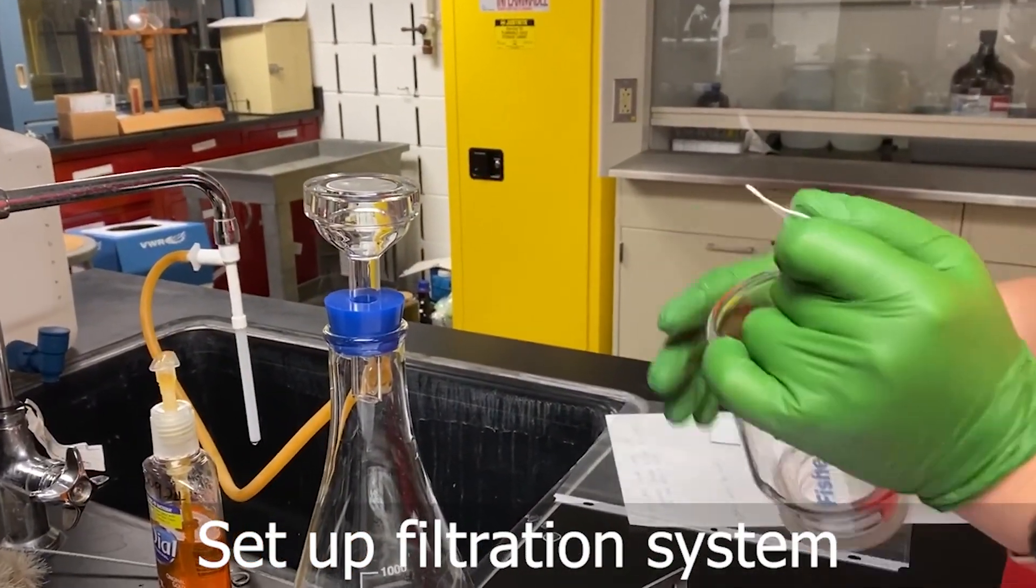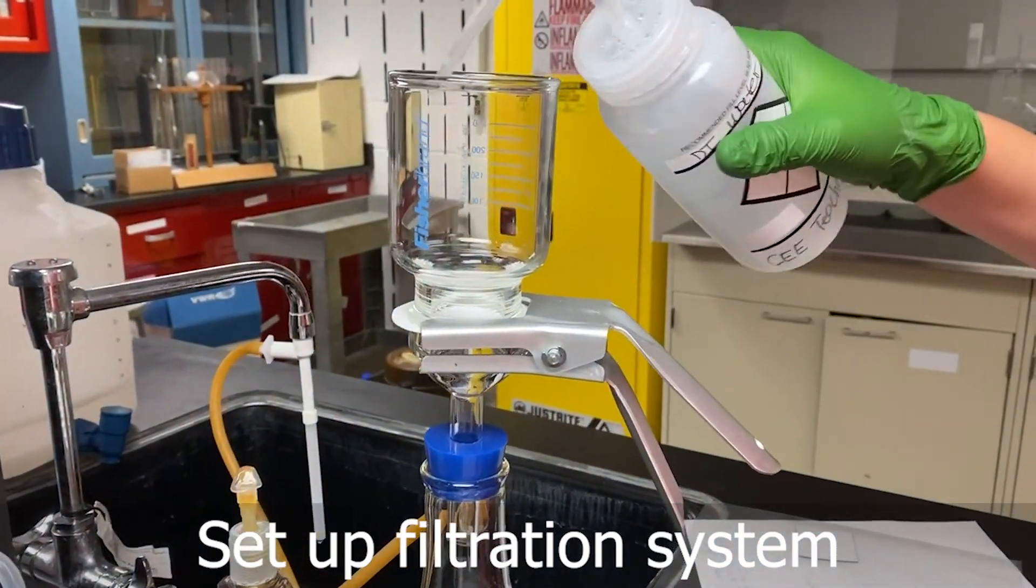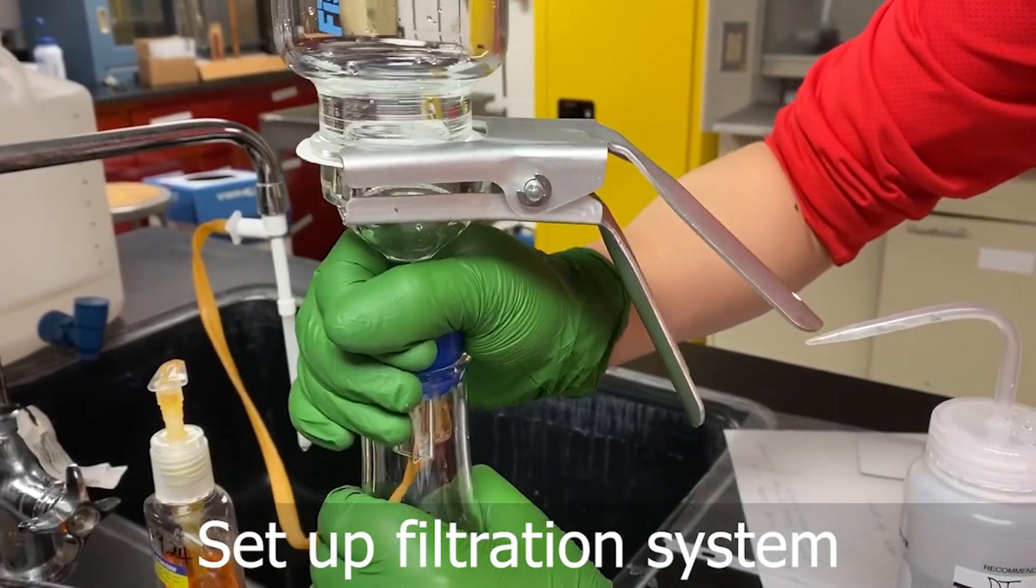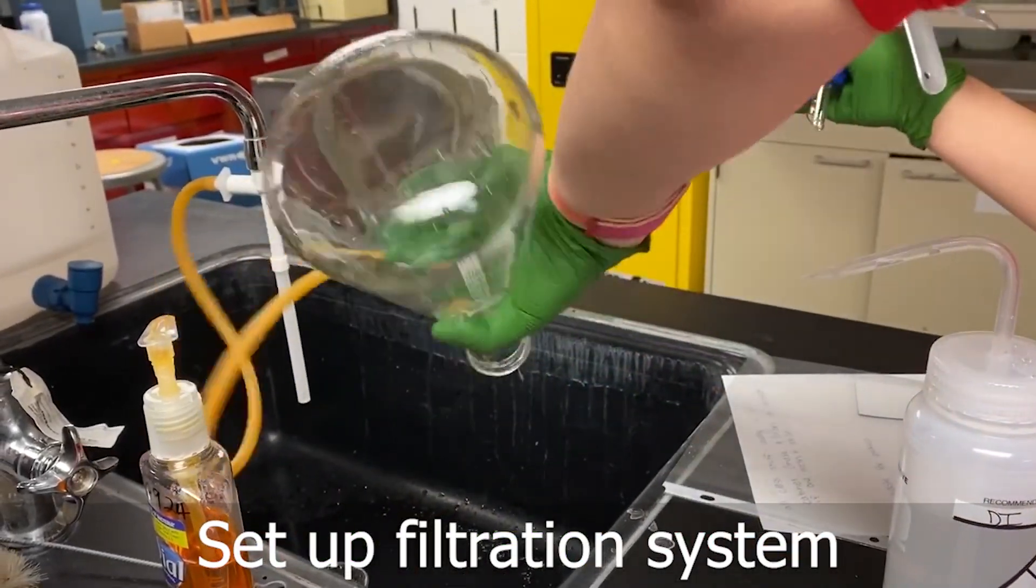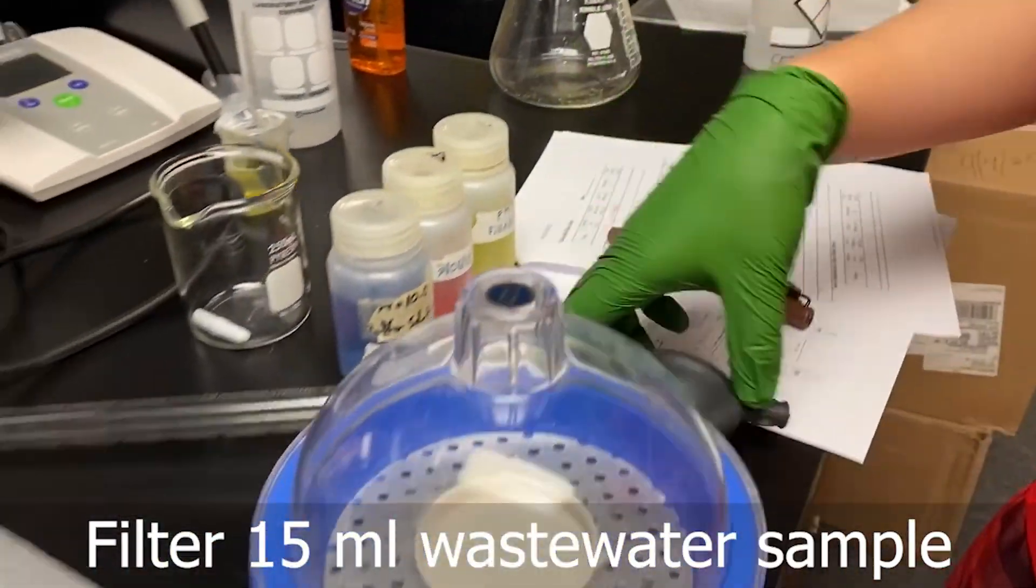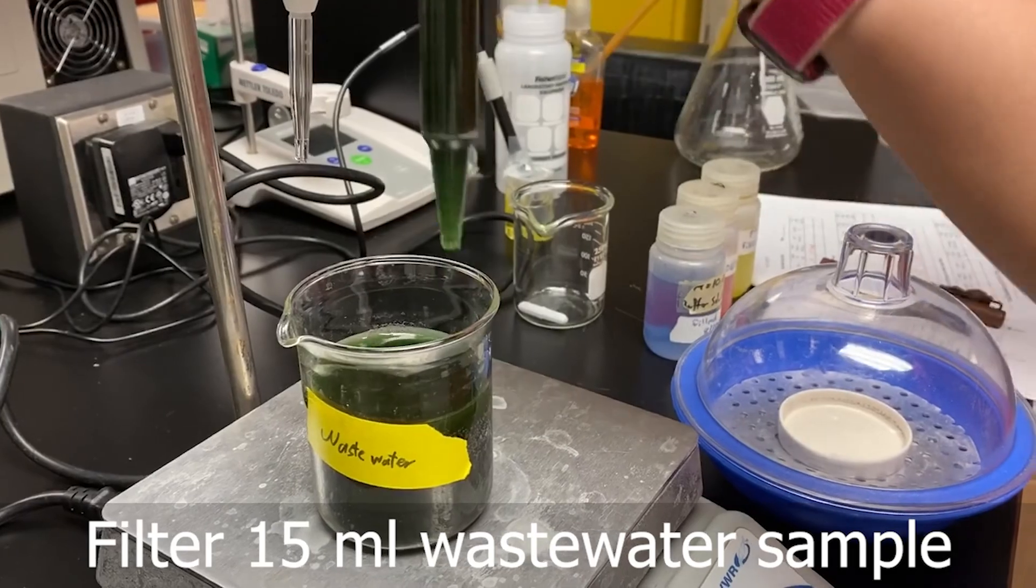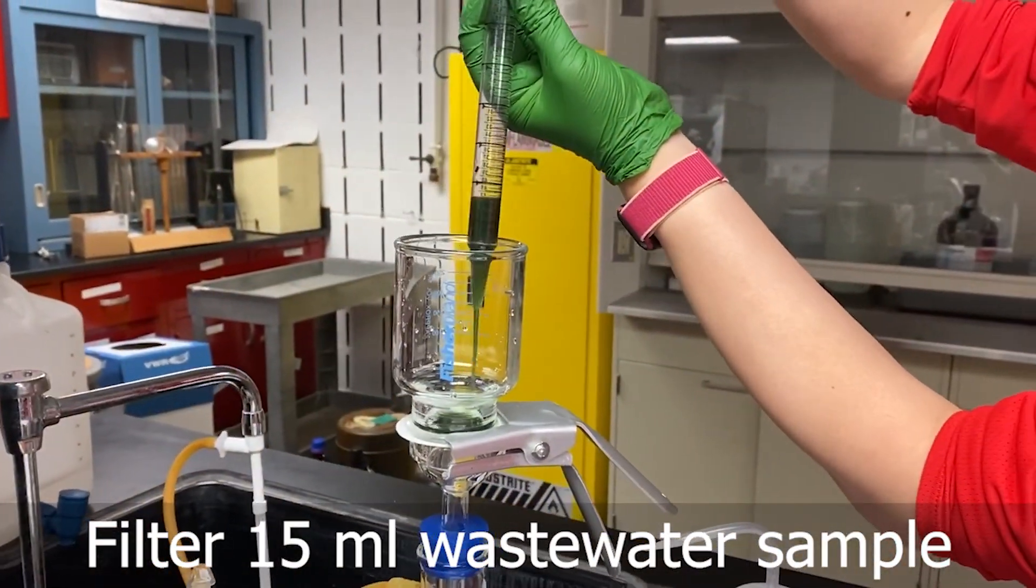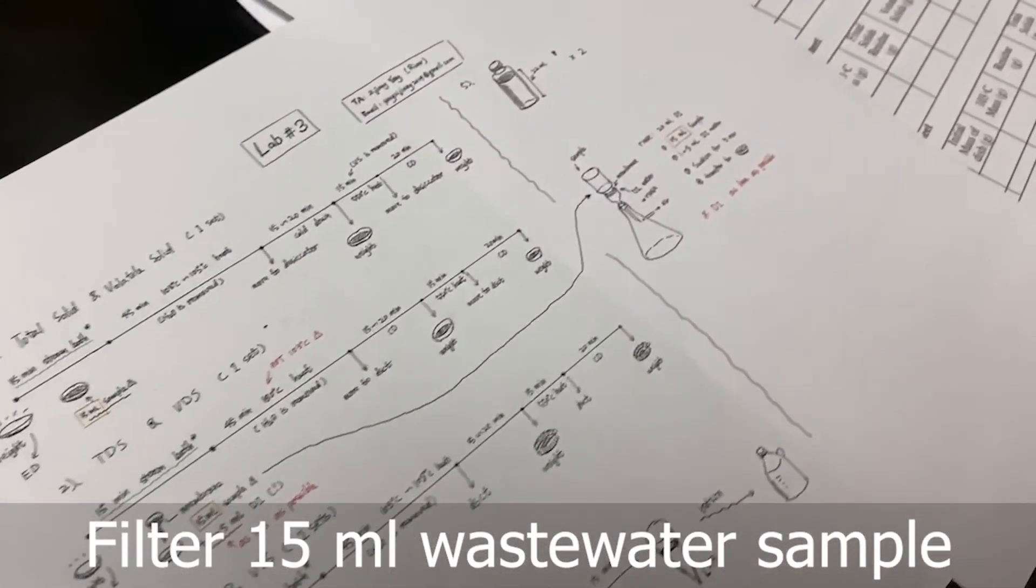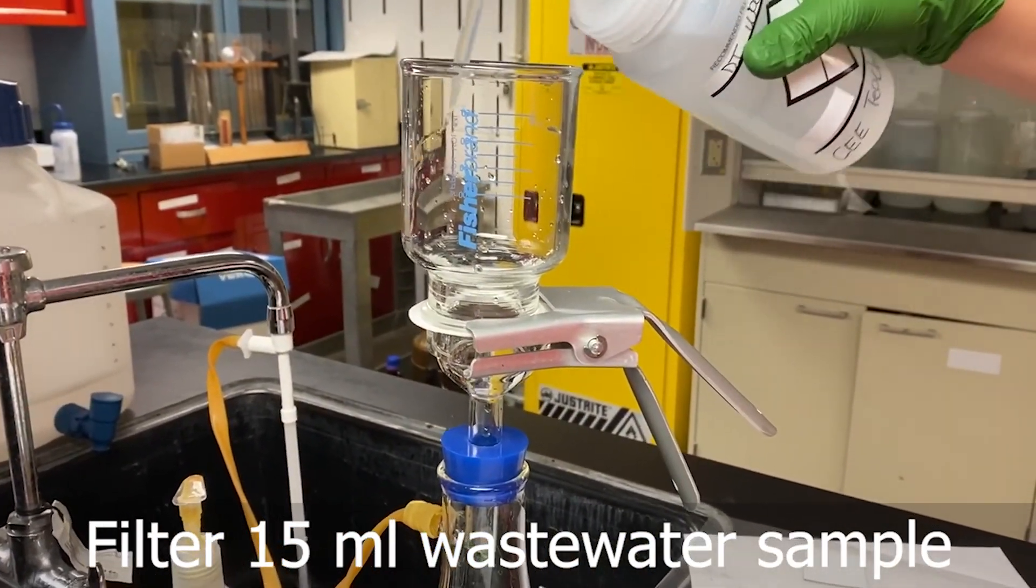And then we are going to use the filtration system. We lay the filter here and then set up the system. We set up the filtration system first, and after that we remove everything to make sure it is clean. Then we can take 15 ml of sample and use the filter. Then we can start vacuum filtering it.